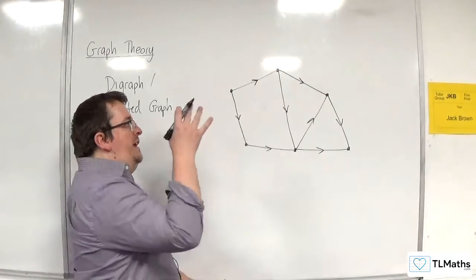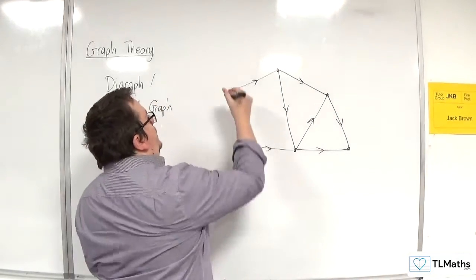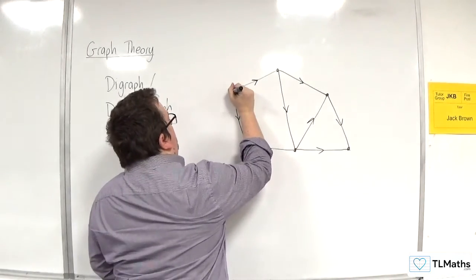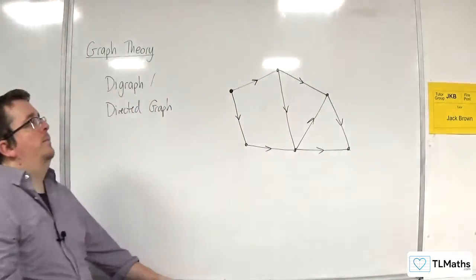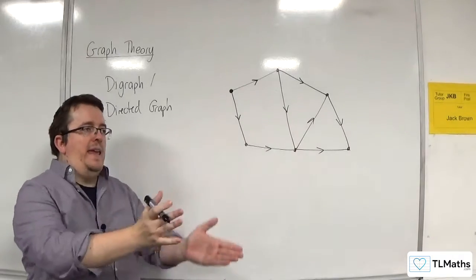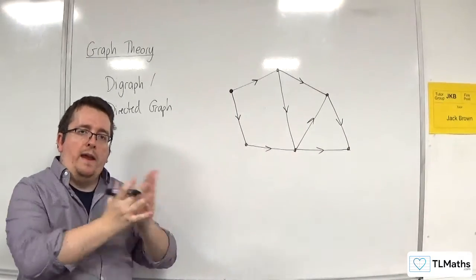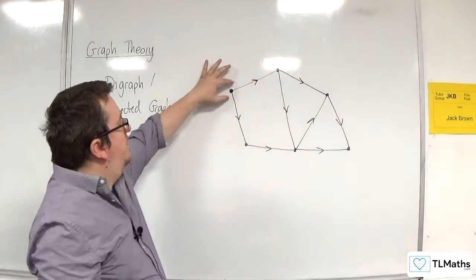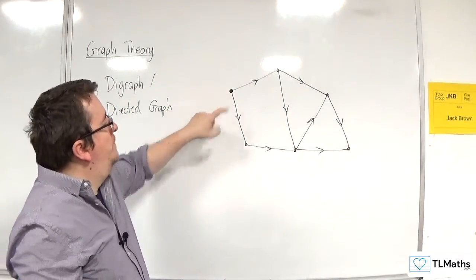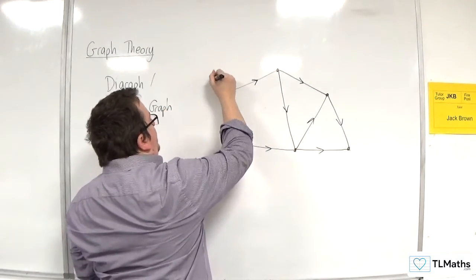So the terminology that goes with this is, when you've got this starting node here where you have any edges that are coming out of it are pointing away, they are only exiting from that node. We refer to this as a source.